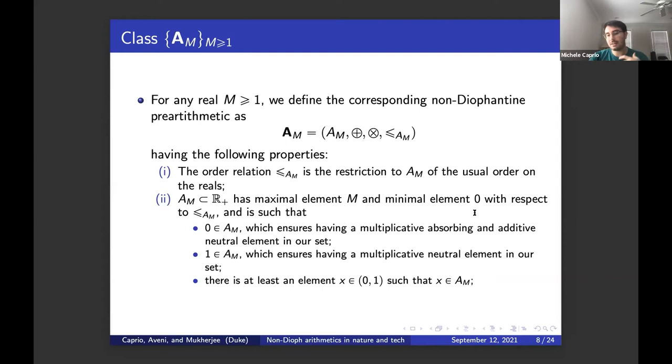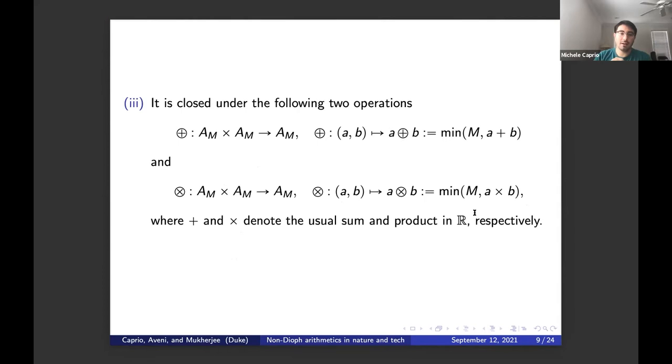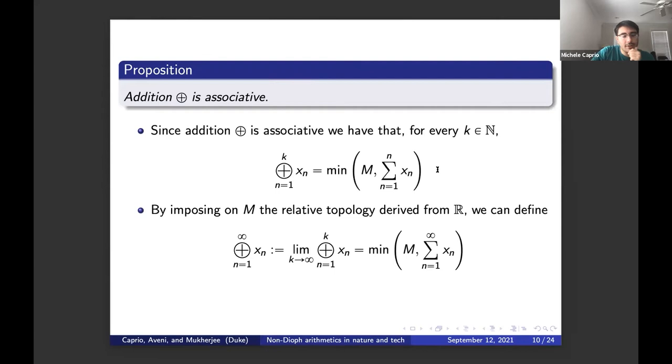We require also that one belongs to A_M. This ensures having a multiplicative neutral element in our set. We require that there is at least an element belonging to the interval (0,1) such that it belongs to A_M as well. And finally, we require that A_M is closed under these two operations, O plus and O times.